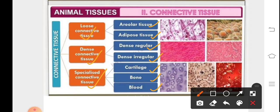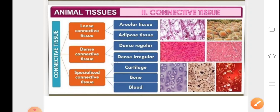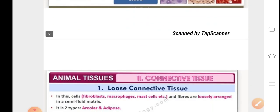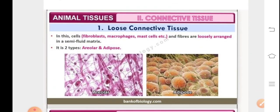Talking about the first connective tissue, that is the loose connective tissue. The characteristics of loose connective tissue are that it has many cells and fibers which are loosely arranged in a semi-fluid ground substance or matrix. It is of two types: the areolar tissue and the adipose tissue.